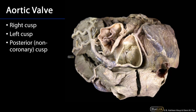Blood from the left ventricle is destined for systemic circulation, so it is going to leave through the aortic valve, which has a right cusp, a left cusp, and a posterior — also known as a non-coronary — cusp. These cusps close during diastole because pressure in the aorta is going to be greater than pressure in the left ventricle, and when that happens blood is going to flow into the coronary arteries.